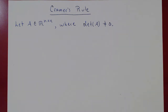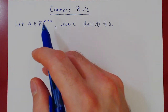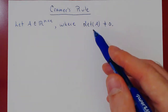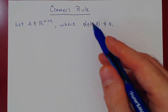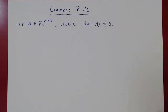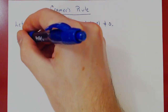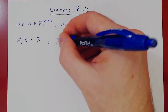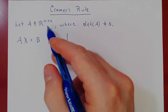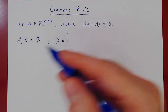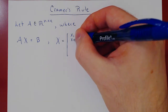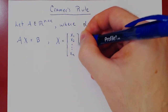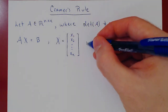Here are the assumptions. We have a square matrix A — an n by n matrix — where the determinant of A is assumed to be non-zero. If you remember, a non-zero determinant implies that A is an invertible matrix. Consider a square linear system where A is the matrix of coefficients, in the form Ax equals b. Since A is n by n, we have n variables: x1, x2, up to xn.